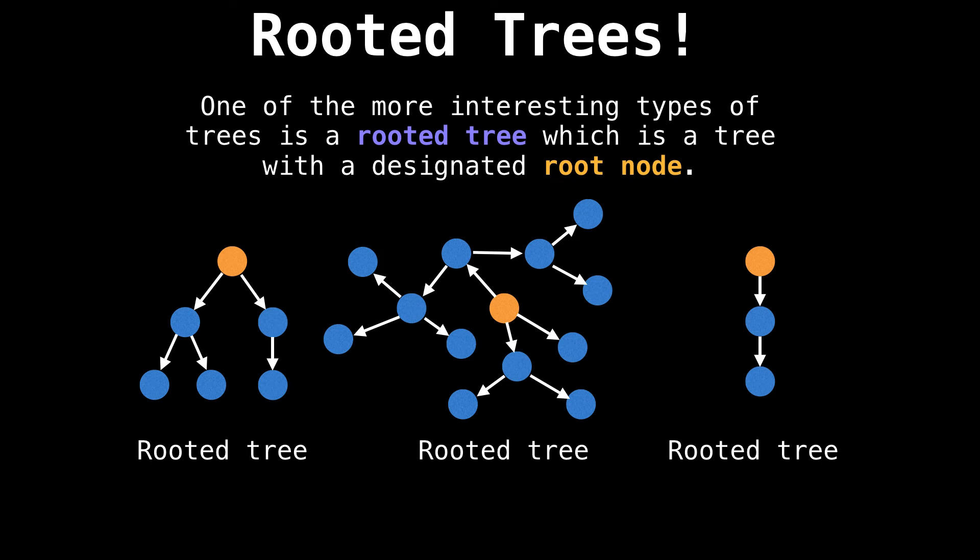All right, I can't keep talking about trees without mentioning rooted trees, which are trees which have a designated root node. I have highlighted the root node in orange. And most rooted trees you'll notice have directed edges which point away from the root node.